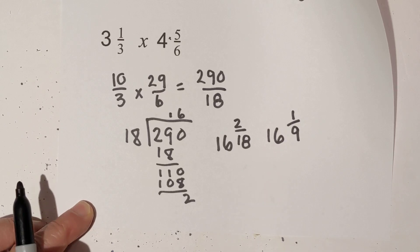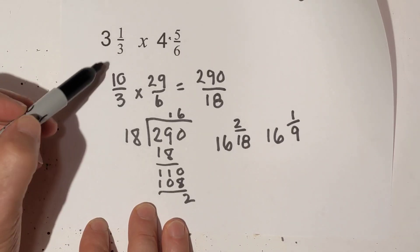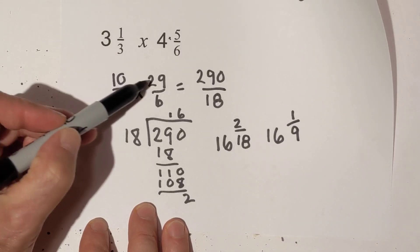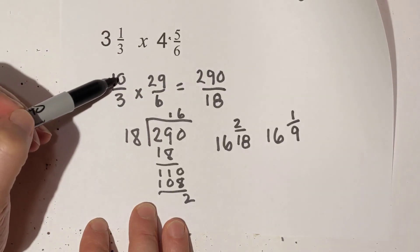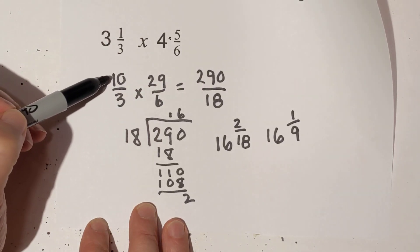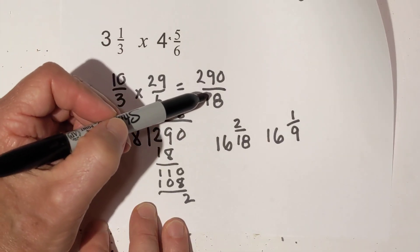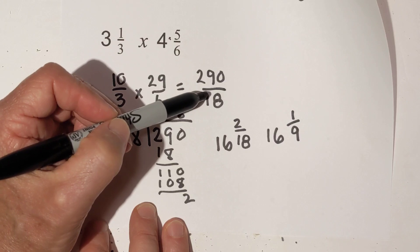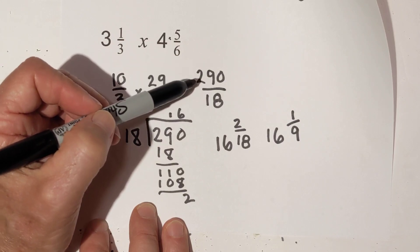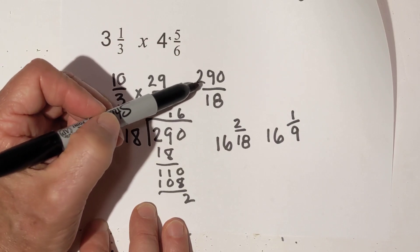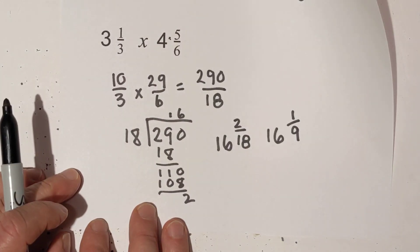Before we move to division, let's summarize what we do for multiplication: first convert to improper fractions, then multiply straight across, then convert back to a mixed number by dividing and using whatever your remainder is.